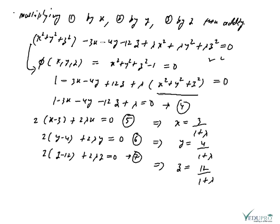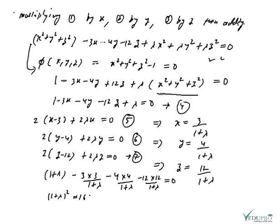Now substituting the values of x, y, z into equation 4: (1+λ) − 3·[3/(1+λ)] − 4·[4/(1+λ)] − 12·[12/(1+λ)] = 0. Simplifying this equation gives: (1+λ)² = 169. Taking square roots on both sides: 1+λ = ±13.